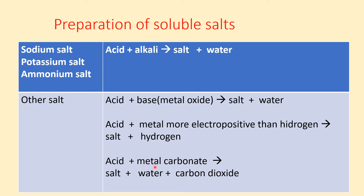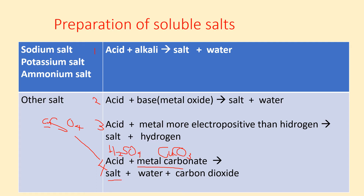The fourth method is acid with metal carbonate — you will get salt, water, and carbon dioxide. For example, for copper sulfate using the fourth method, you use copper carbonate (CuCO₃) with sulfuric acid (H₂SO₄). From this reaction, you will produce copper sulfate, water, and carbon dioxide.